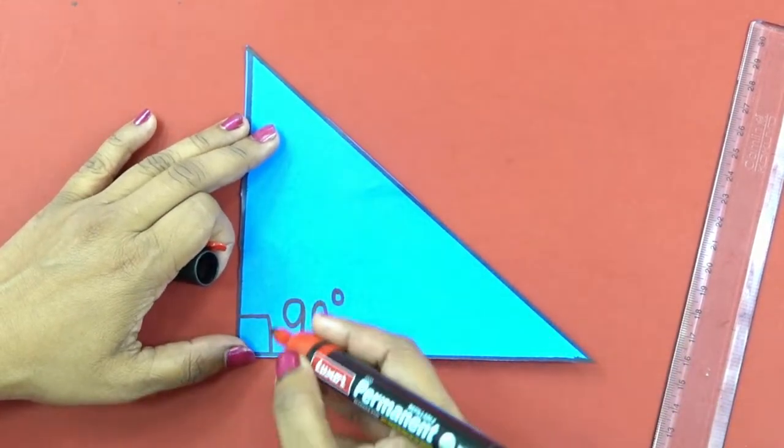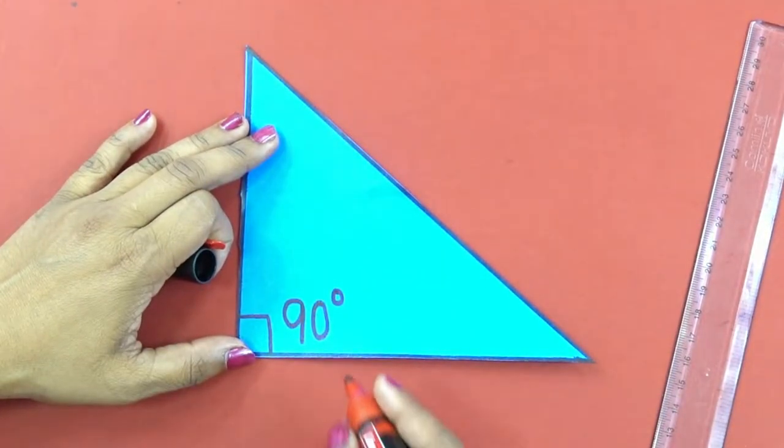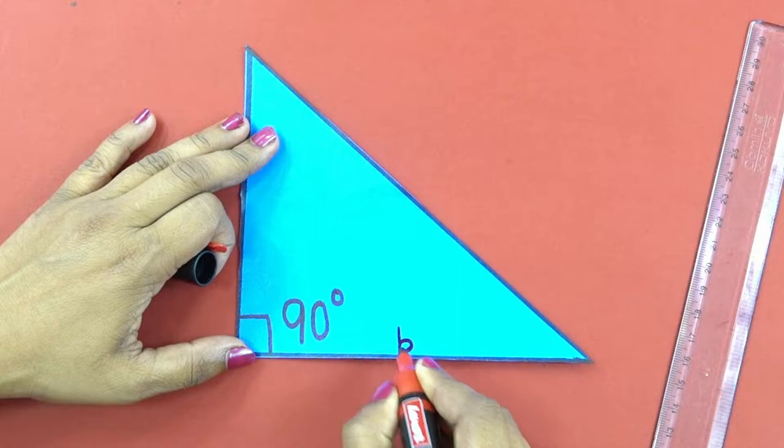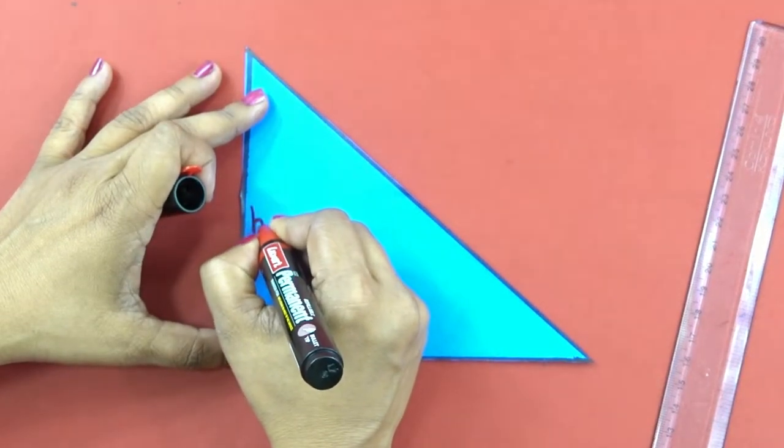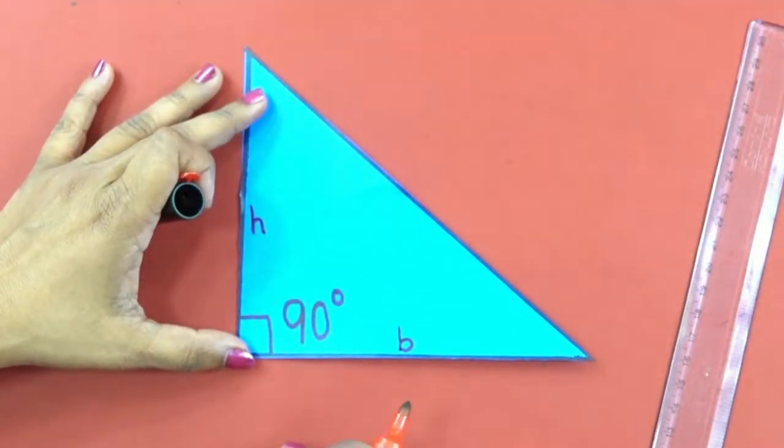We have a cutout of a right angle triangle with base as this side and height as this side.